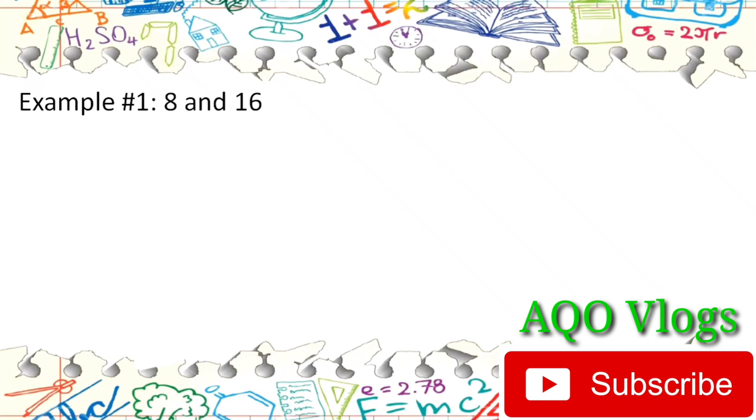For example, we have 8 and 16. First we will list down the possible factors of 8: we have 1 times 8 and 2 times 4. Next we list down all the factors of 16: that is 1 times 16, 8 times 2, and 4 times 4. Next we identify common factors. So we have 1, we have 8, we have 2, and we have 4. From the common factors of 8 and 16, we will find the greatest, the highest factor, and that is 8.